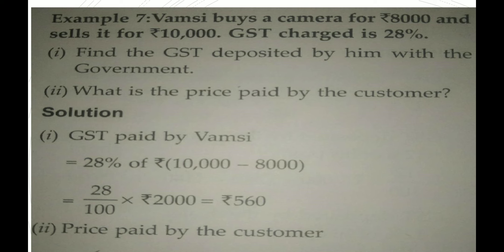Bhamsi buys a camera for Rs. 8000 and sells it for Rs. 10,000. GST charged is 28%. Find the GST deposited by him with the government. What is the price paid by the consumer?